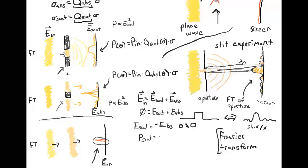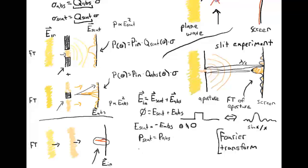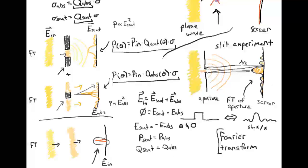This means that the power scattered in any direction — proportional to the square of the electric fields — has to equal the power absorbed in any theta direction. The radiation scattered off and appearing on the screen from the absorption case must equal what shows up from the scattering case. Since P_scat equals power_in times Q_scat times sigma, and P_abs equals the same with Q_abs, we get that Q_scat equals Q_abs, again for theta not equal to zero.